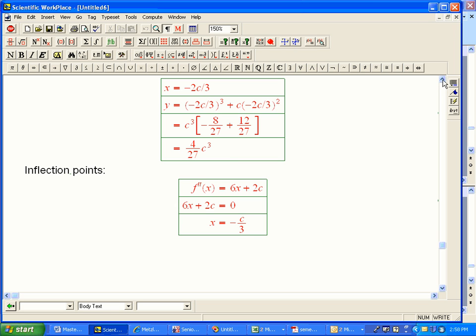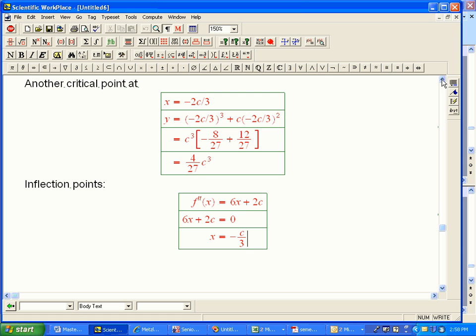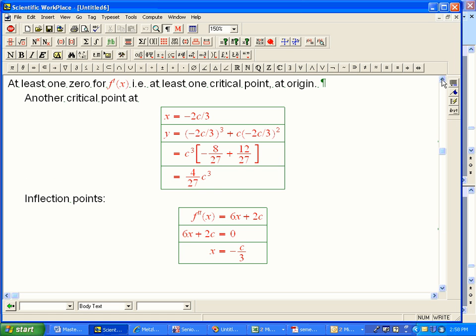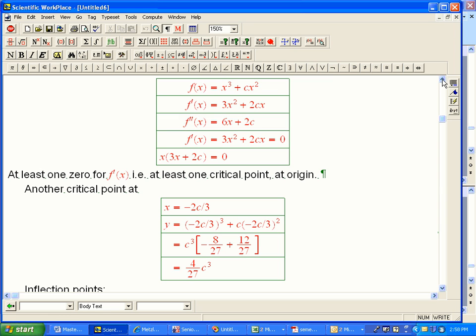That's halfway in between the fixed critical point at 0 and the moving critical point at minus 2c over 3. And that's actually a feature of all cubics, is that the one inflection point is always halfway in between the two critical points. So that's going to move in sync with this information. For example, if somebody asked you,